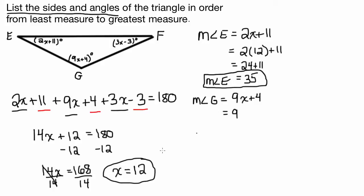Then what we're going to do is just substitute because we know x is 12. Substitute it in. So 9 times 12 plus 4. So 9 times 12 is going to be 108, plus 4. So then 108 plus 4 is going to be 112. So the measure of angle G is 112 degrees.